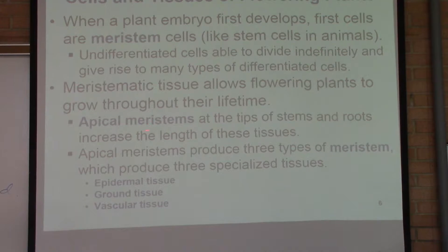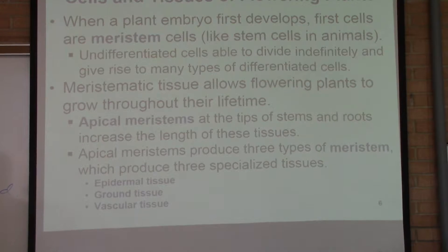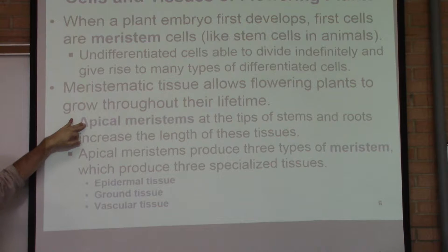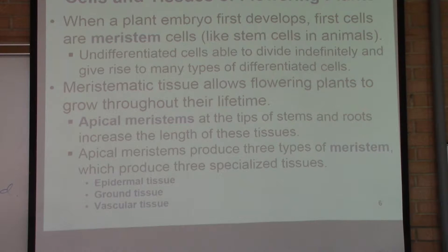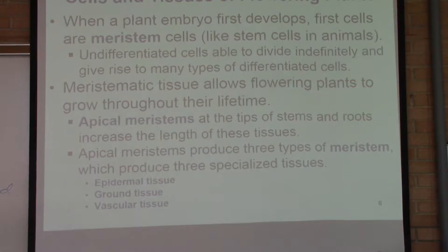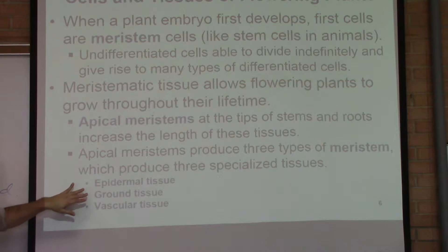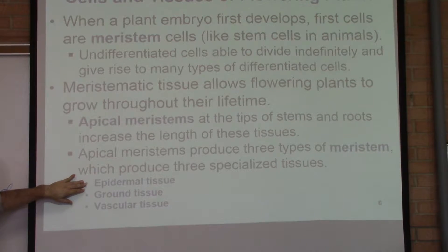Apical meristems are present at the apex — at the tips. The apical meristem is what is present at the tip of growth. When shoots are produced, it is done with the help of the apex or tip of the shoot, and roots continue to grow and expand from their tips as well. This apical meristem produces three types of specialized tissues: epidermal tissue, ground tissue, and vascular tissue.